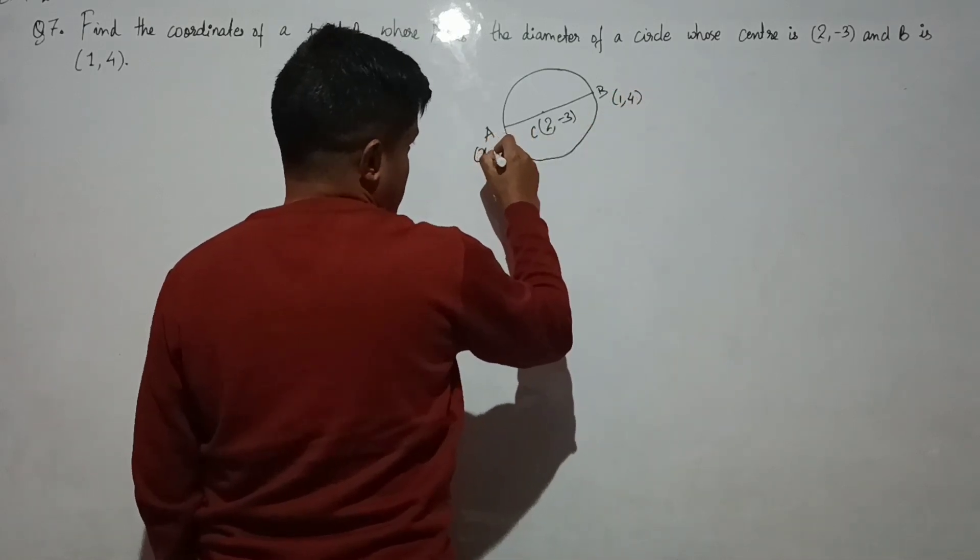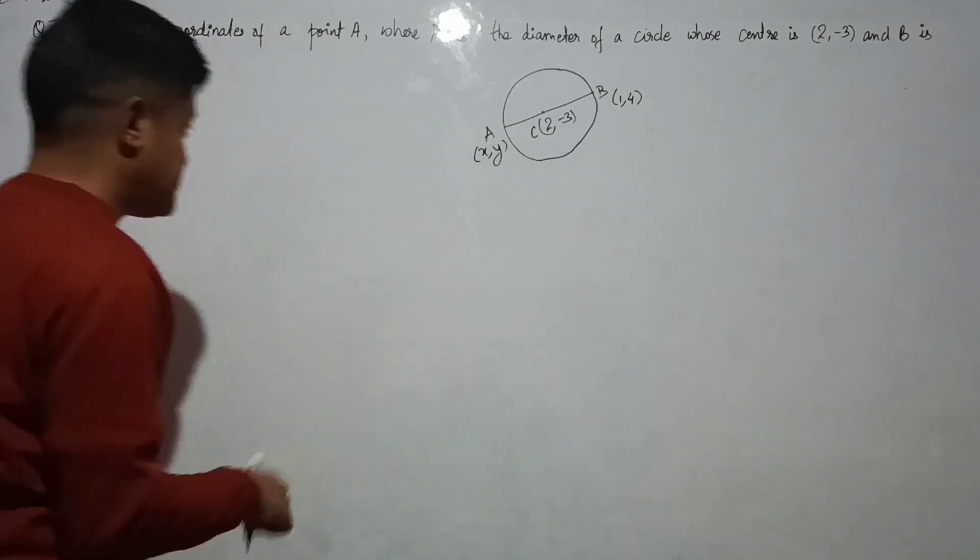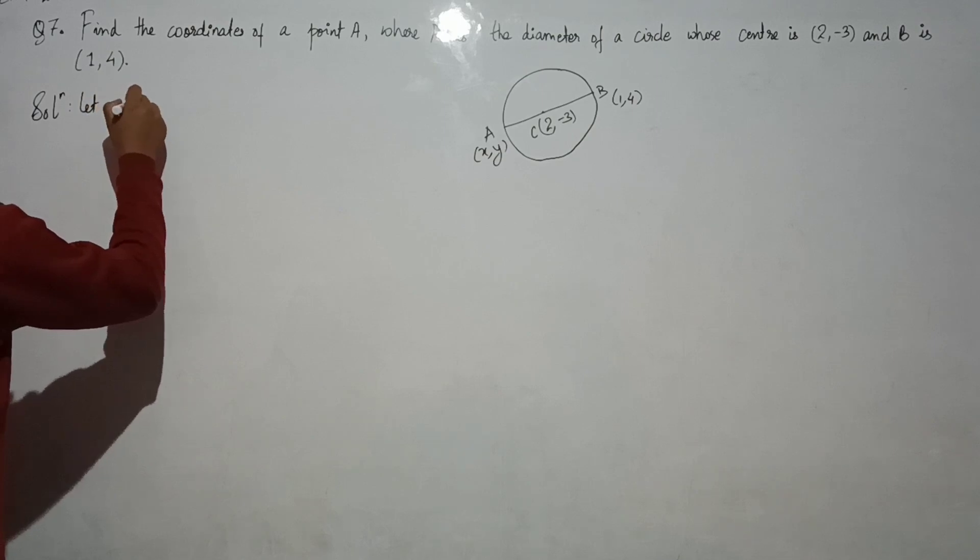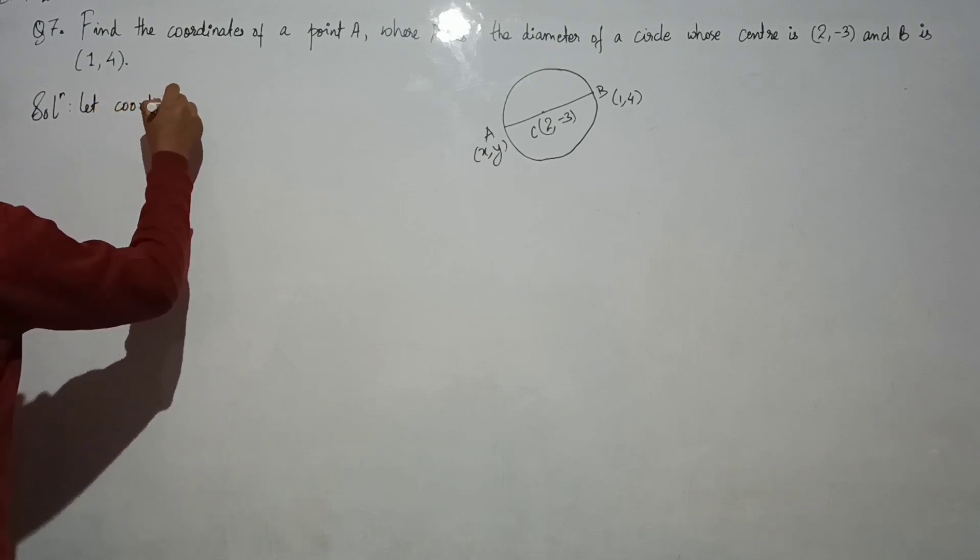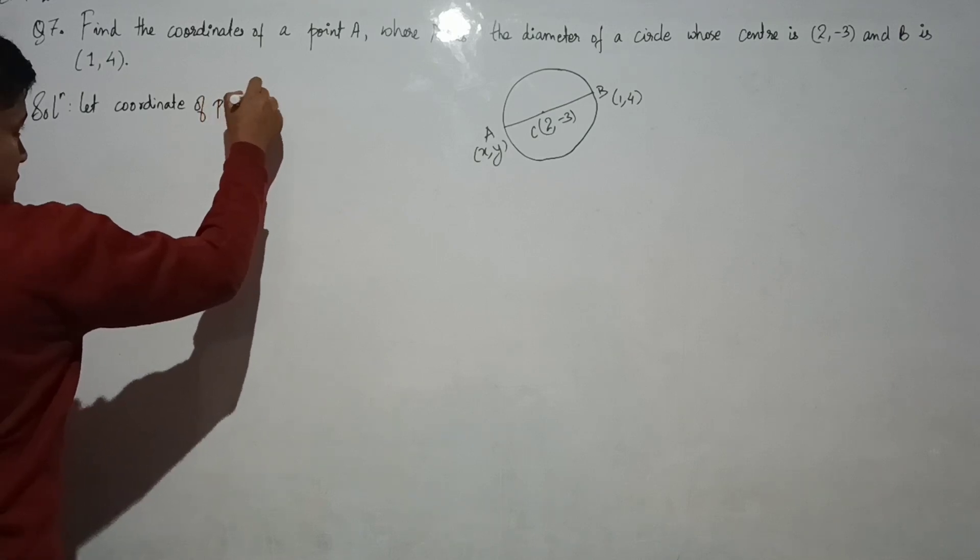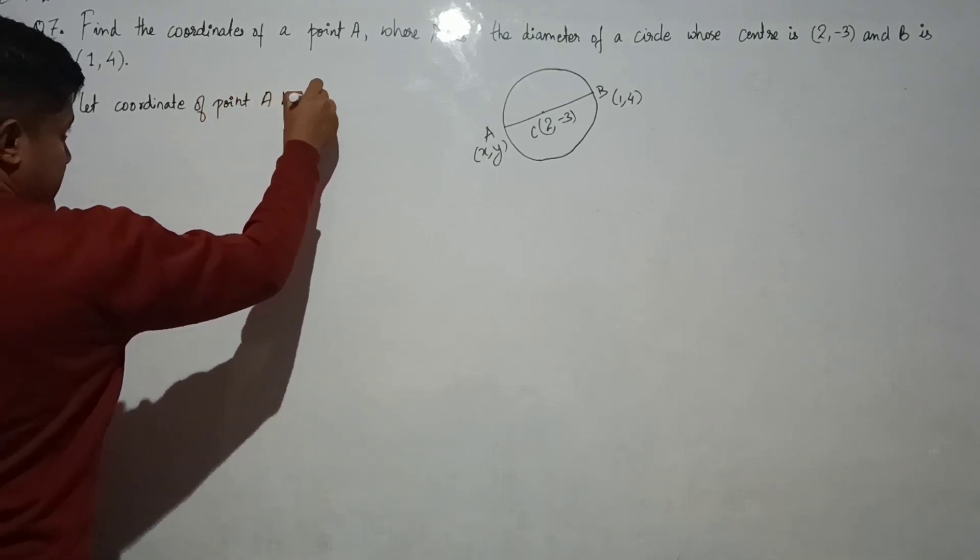So let A be (X, Y). The solution: let coordinates of point A be (X, Y). Okay.